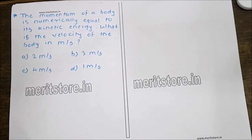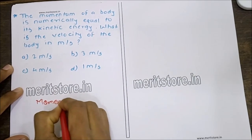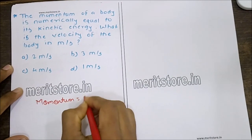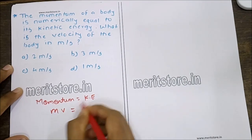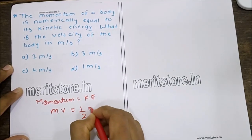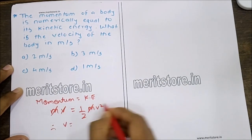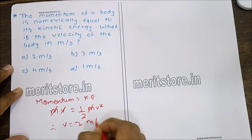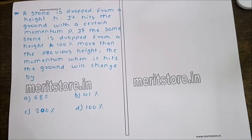The momentum of a body is numerically equal to its kinetic energy. What is the velocity of the body? The options given are 2, 3, 4, and 1 meter per second. Momentum = MV and kinetic energy = ½MV², so MV = ½MV², giving V = 2 meters per second. Option A is the correct answer.